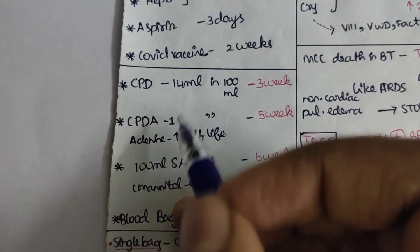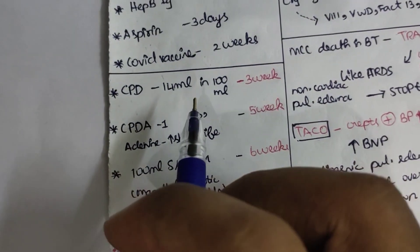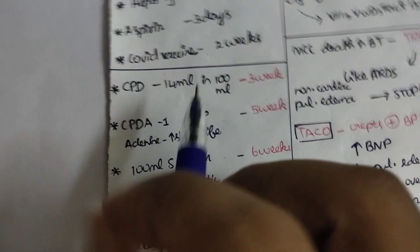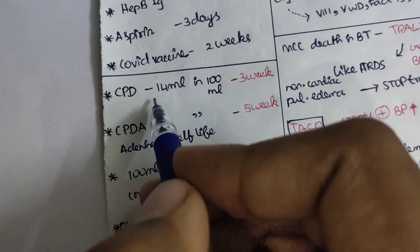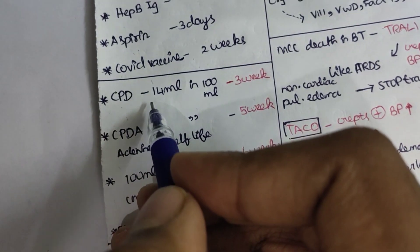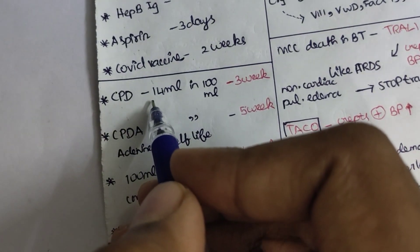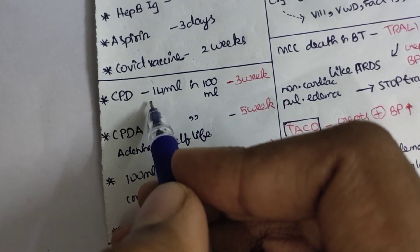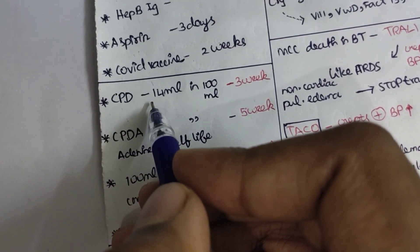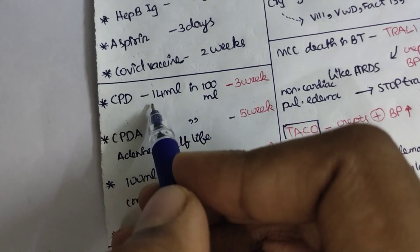Certain compounds are added to blood products to increase their shelf-life. First is citrate phosphate dextrose. It is added in the quantity of 14 ml for every 100 ml of blood products, which increases the shelf-life of RBC and whole blood to about three weeks.